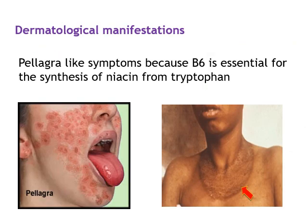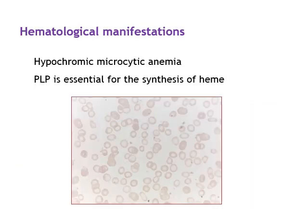Regarding dermatological manifestations: since vitamin B6 is essential for synthesis of niacin from tryptophan, its deficiency can lead to niacin-deficiency-like symptoms such as pellagra-like changes, specifically the Casal's necklace, hand dermatitis, glossitis, etc.